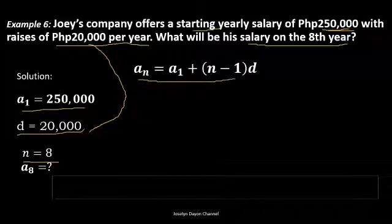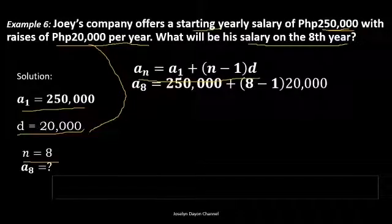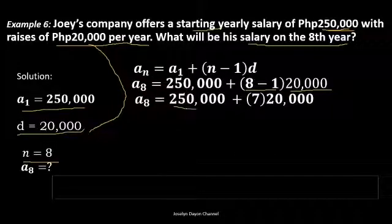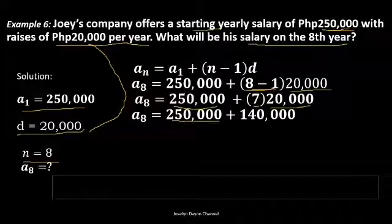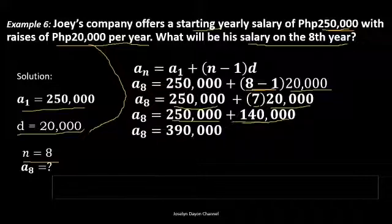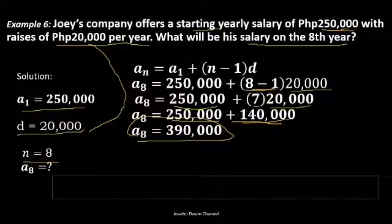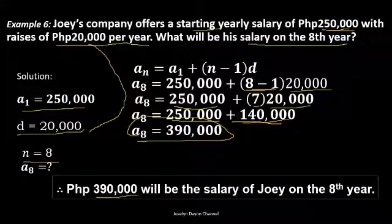By formula: a sub n equals a sub 1 plus the quantity of n minus 1 times d. Substituting: 250,000 plus the quantity of 8 minus 1 times 20,000. Simplify: 250,000 plus 7 times 20,000 equals 250,000 plus 140,000. That equals 390,000. In our conclusion, do not forget to write the unit. Therefore, 390,000 pesos will be the salary of Joey on the 8th year.